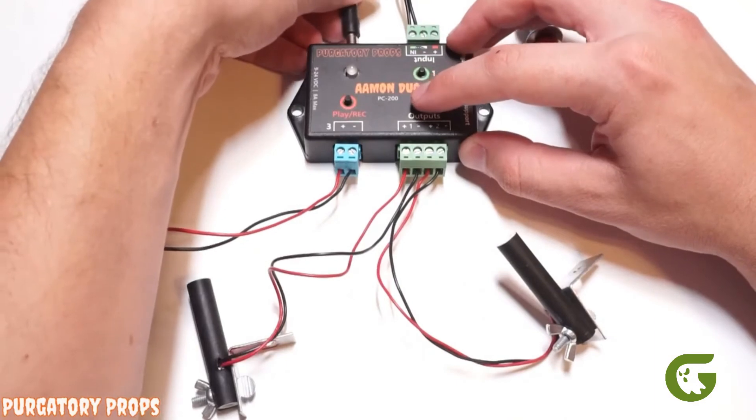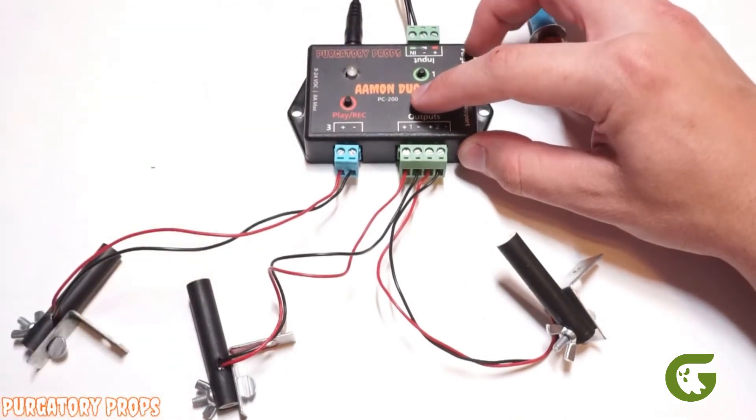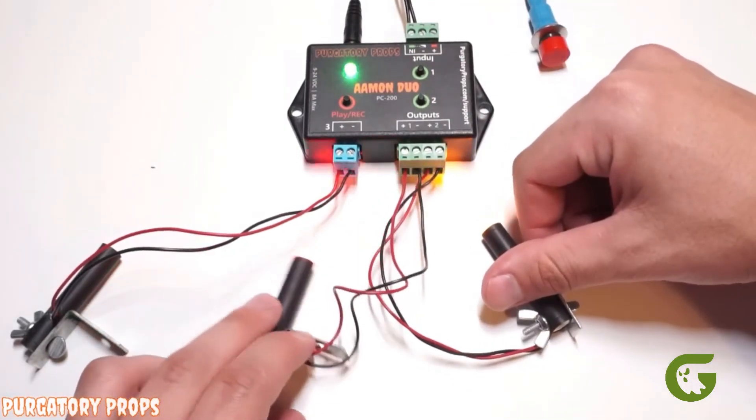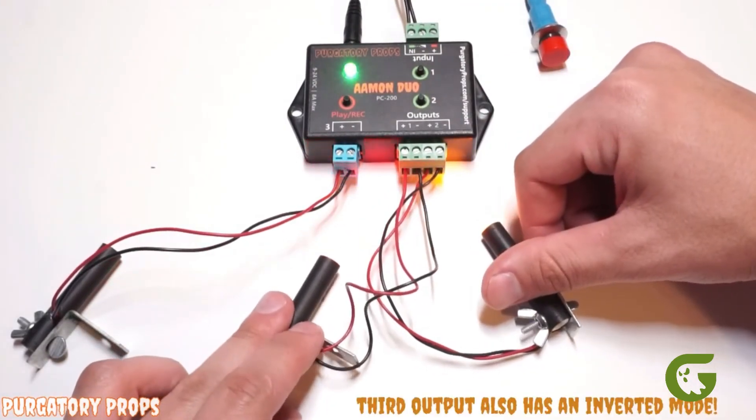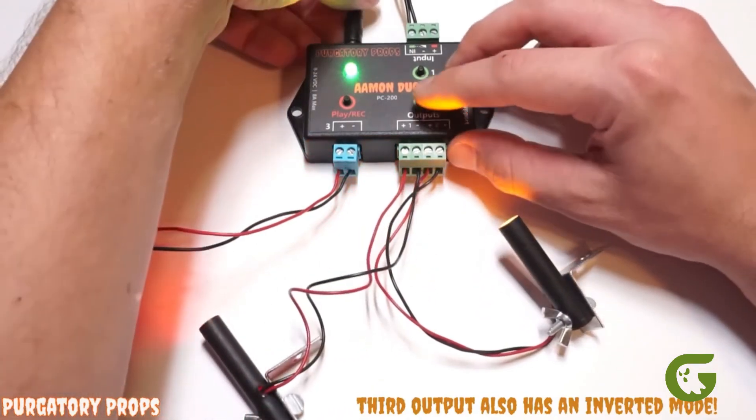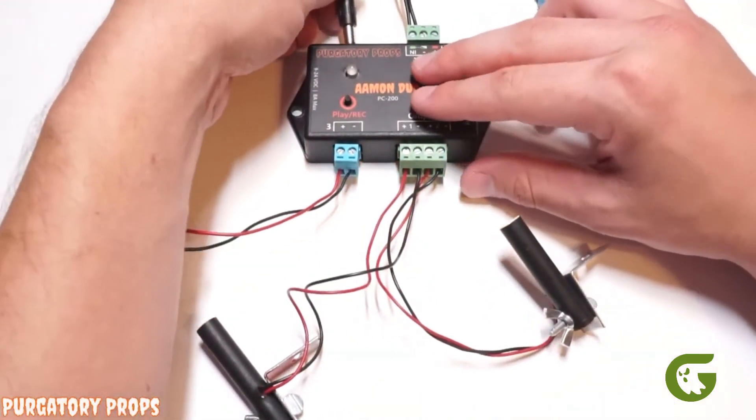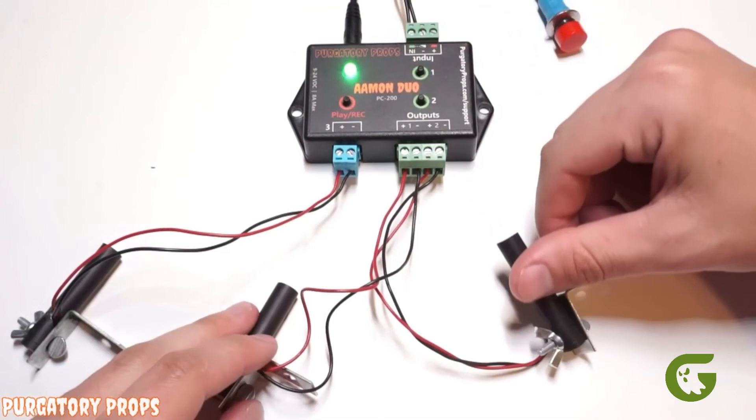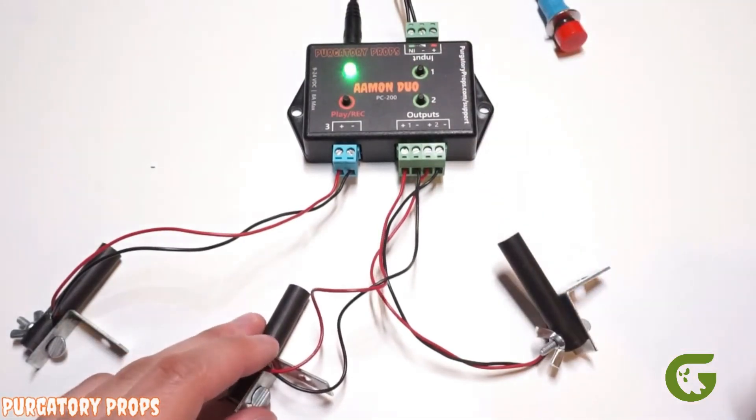You can do this with output two by holding button two, releasing when it turns red. Now output two and output one are both in inverted mode. You could turn those off by holding those same buttons, or you can hold both of them at the same time. And it'll toggle both of those in inverted mode.